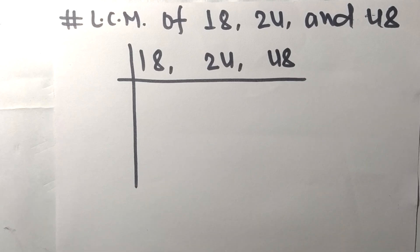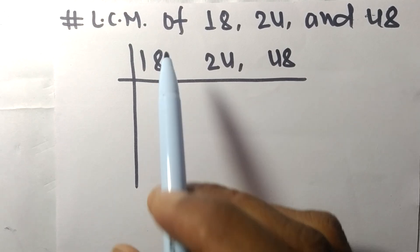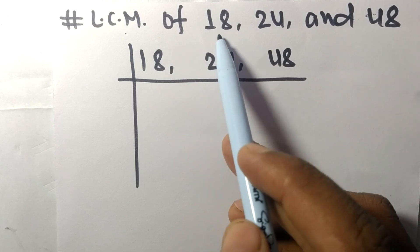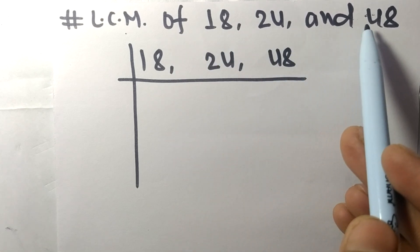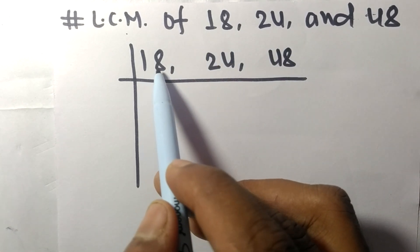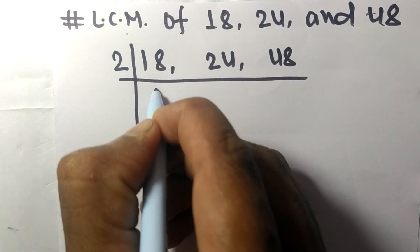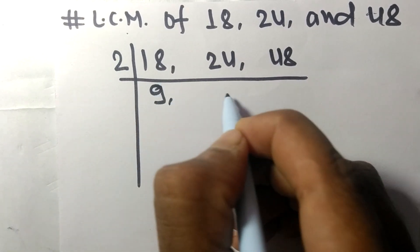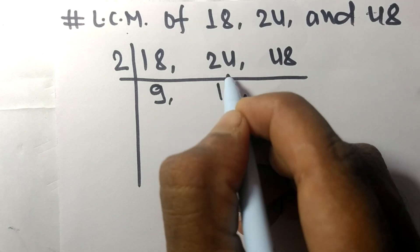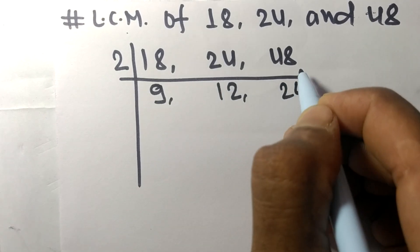Today in this video we shall learn to find the LCM of 18, 24, and 48. All these numbers are divisible by 2, so 2 times 9 equals 18, 2 times 12 equals 24, 2 times 24 equals 48.